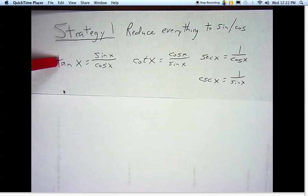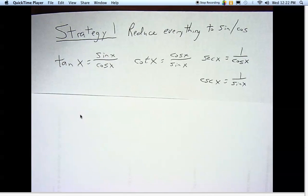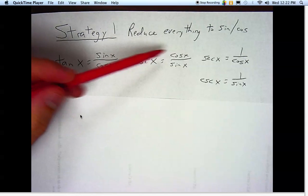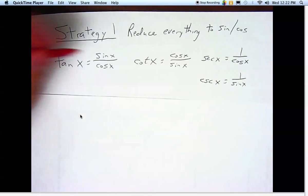So the big four things for this strategy are knowing these definitions. Tangent is sine over cosine, cotangent is cosine over sine, secant is one over cosine, and cosecant is one over sine. And we've seen these a lot,